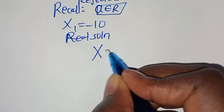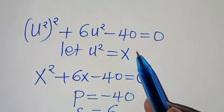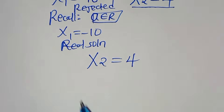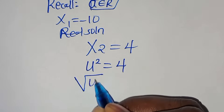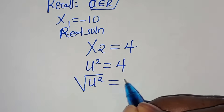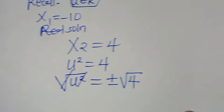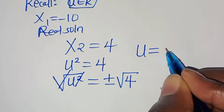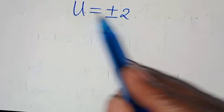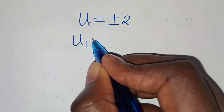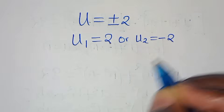Since x = u², we have u² = 4. Taking the square root of both sides: u = ±√4 = ±2. So u₁ = 2 or u₂ = −2.